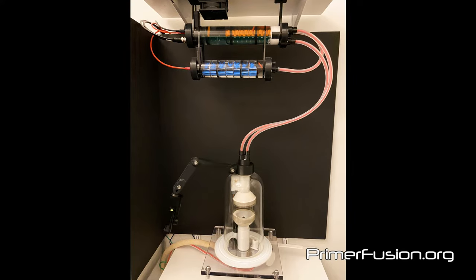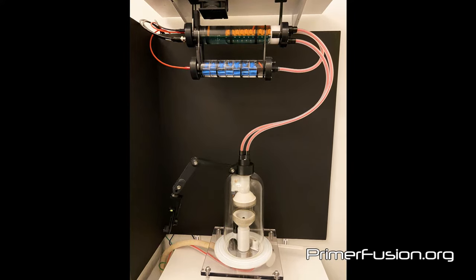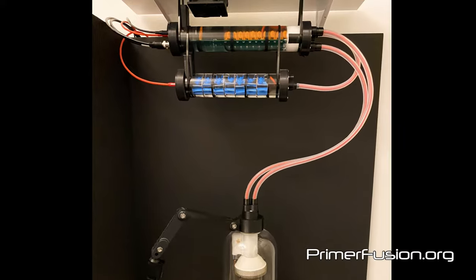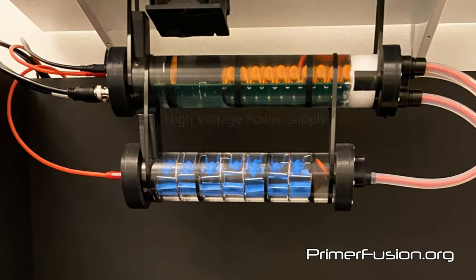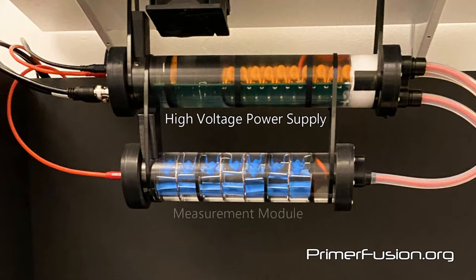Since I could not find commercially available high voltage power supplies that met my requirements, I decided to design and build my own. Here we see the high voltage power supply and the measurement module. The measurement module is a thousand to one voltage divider. By connecting the measurement module to an oscilloscope, you can measure the voltage level, frequency, and waveform of the electricity passing through the plasma.